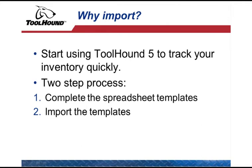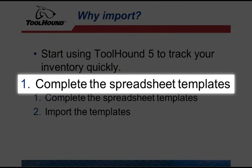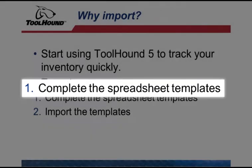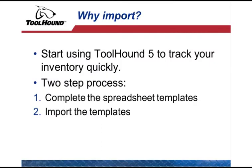This process is done in two steps. The first step is to complete the spreadsheet according to the required formatting. In this step, you gather and standardize the data you wish to import into ToolHound. As covered in the Core Principles video, if your organization already has standardized part numbers and descriptions, you should continue to use these corporate standards.